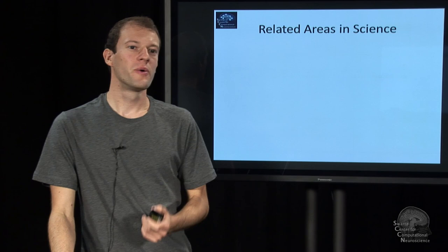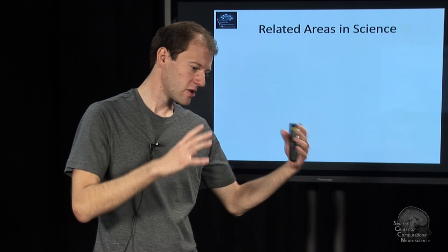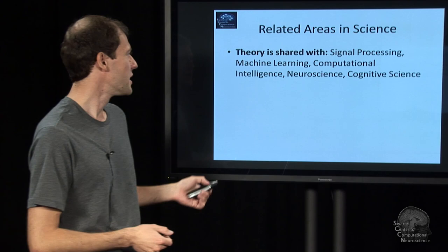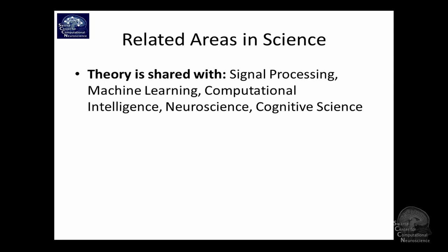We will talk a little bit about where the field is situated in the context of all the different scientific fields that are related. The first one is the theory that BCI entails is sort of interdisciplinary and it overlaps quite a bit with things like signal processing, machine learning because you need this adaptivity, computational intelligence and related fields on one hand.